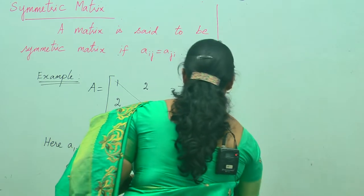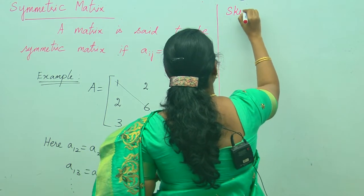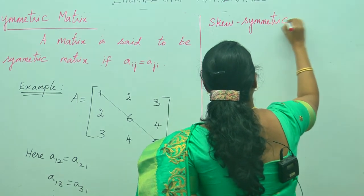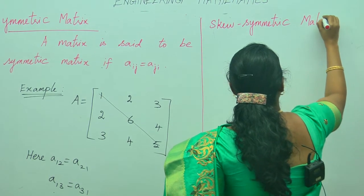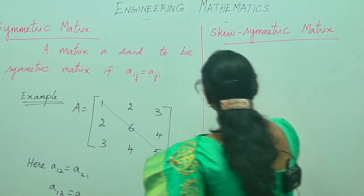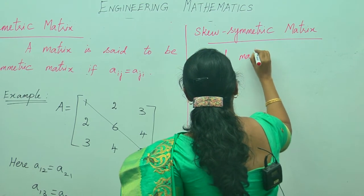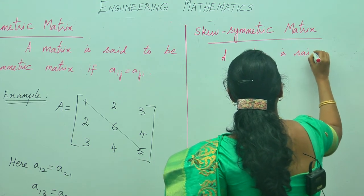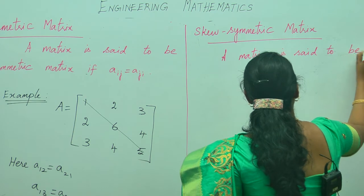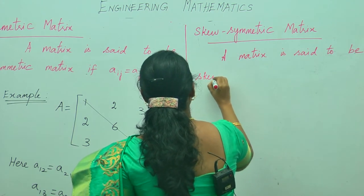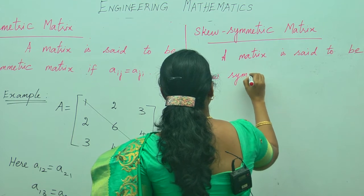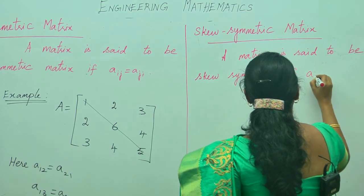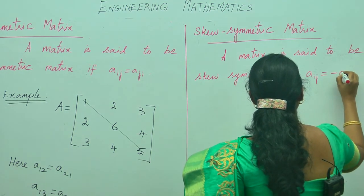Next: skew symmetric matrix. A matrix is said to be skew symmetric if A_ij equals minus A_ji.